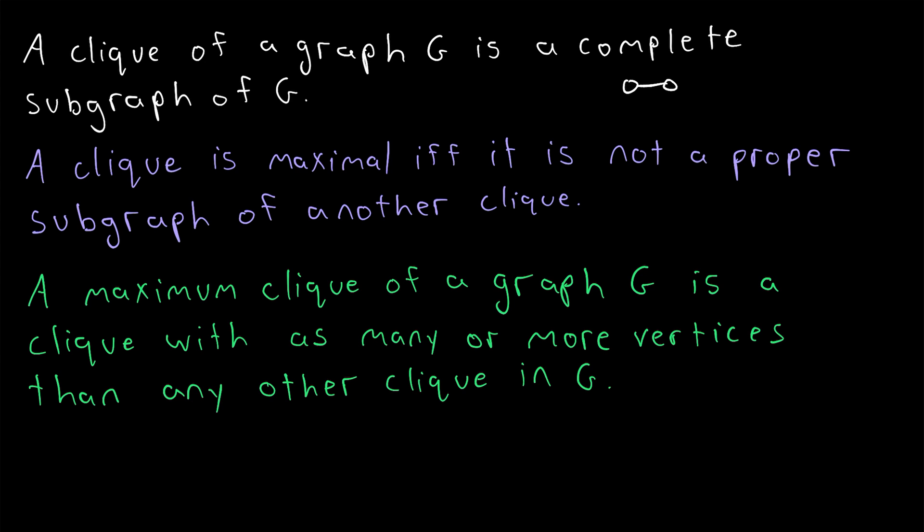Of course, if a clique can be extended, for example, consider this little clique here. If it can be extended, there must be some other vertex in the graph adjacent to all vertices in the clique. And then we could extend the clique by including that vertex.